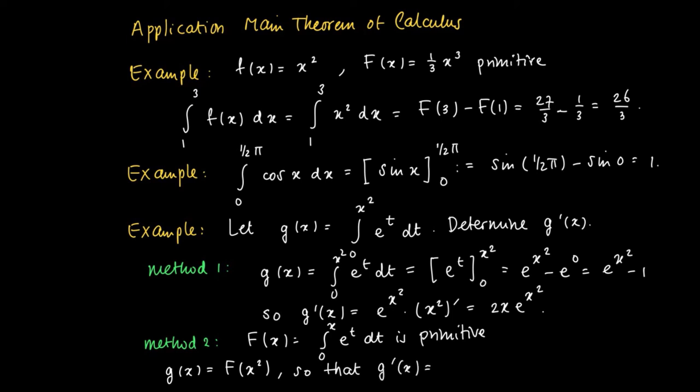We may find the derivative of g using the chain rule for differentiation, which gives F prime of x squared times 2x. Since capital F is the primitive of e to the power t, and F prime equals e to the power t, we can plug in e to the power x squared times 2x.